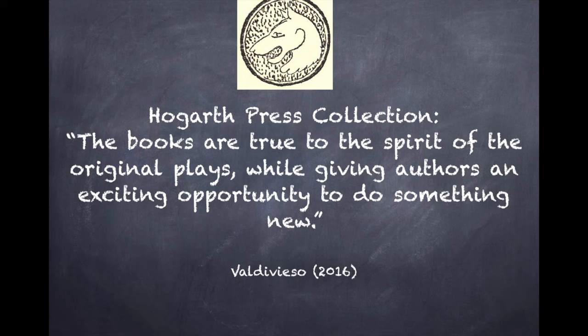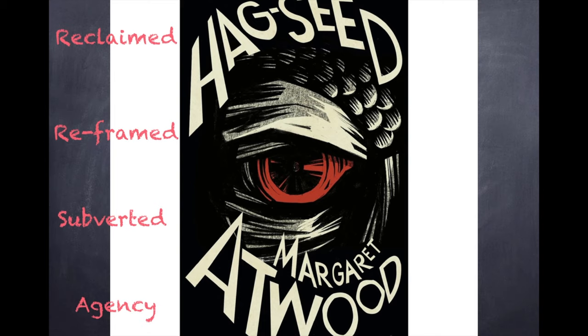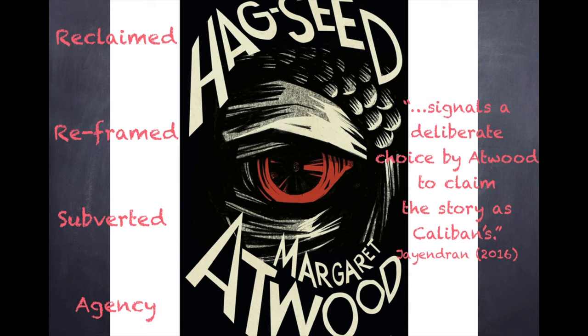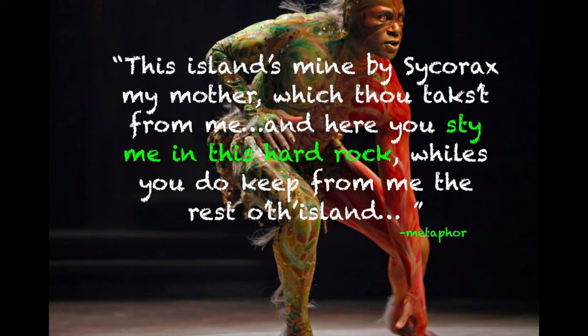The very title, Hag-Seed itself, suggests that the work is not an exact replication of the original, but offers fresh interpretations, as was the intention as part of the Hogarth collection. The pejorative 'Hag-Seed' is reclaimed and reframed. The choice of subverting the demeaning name given to Caliban by Prospero in the title indicates the agency of this character. By naming the text after Caliban, the novel signals a deliberate choice by Atwood to claim the story, even partly, as Caliban's.